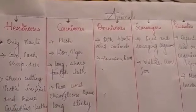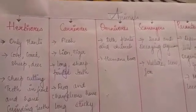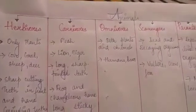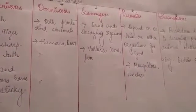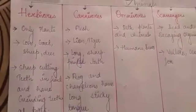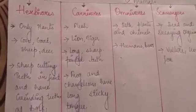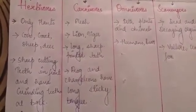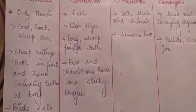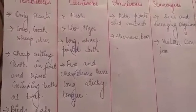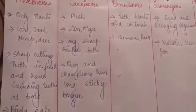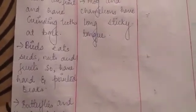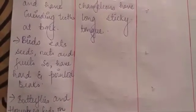Moving to the next topic: classification of animals based on their food habit. Based on what animals eat, we classify them as herbivores, carnivores and omnivores, and there are three more — scavengers, parasites and decomposers. Herbivores — 'herb' means plant and 'vore' means eating — so herbivores eat only plants: cow, deer, sheep and goat. They have sharp cutting teeth at the front and grinding teeth at the back. Birds that eat seeds and nuts have hard, pointed beaks. Butterflies and honey bees feed on nectar using a proboscis — a mouth part that allows them to suck nectar easily.